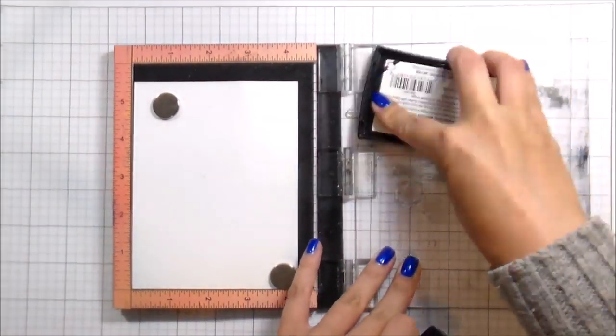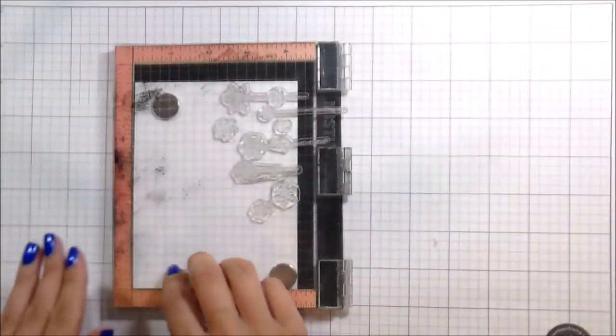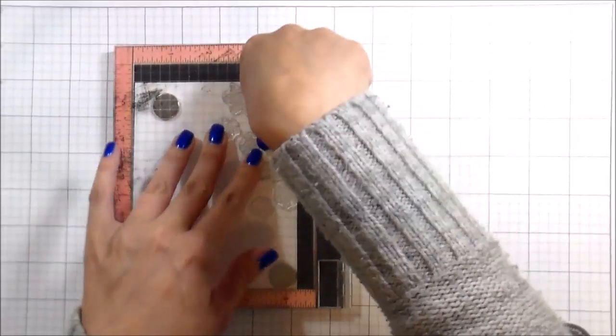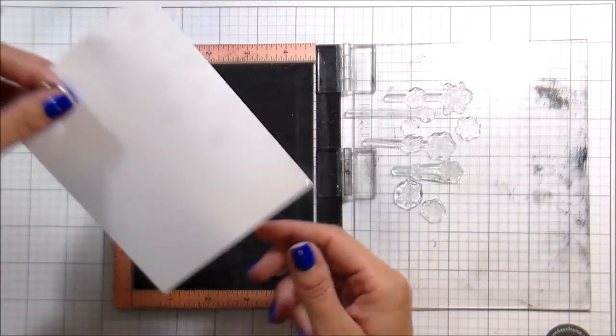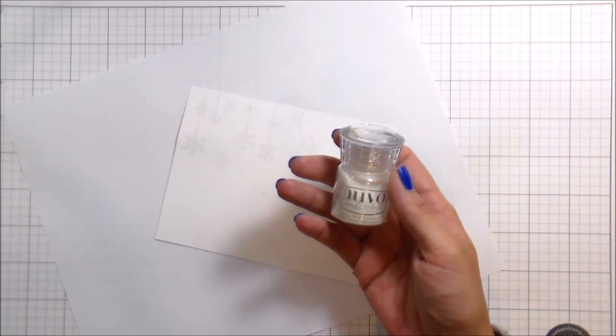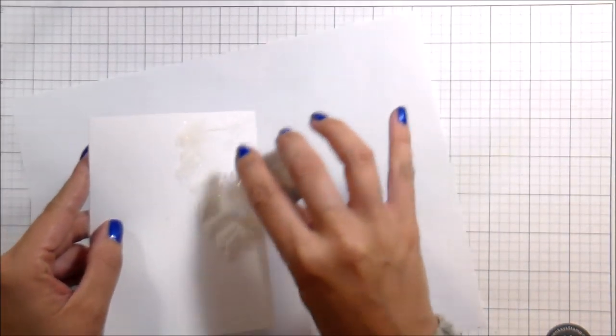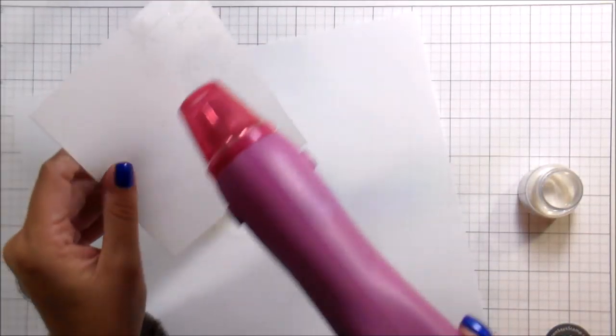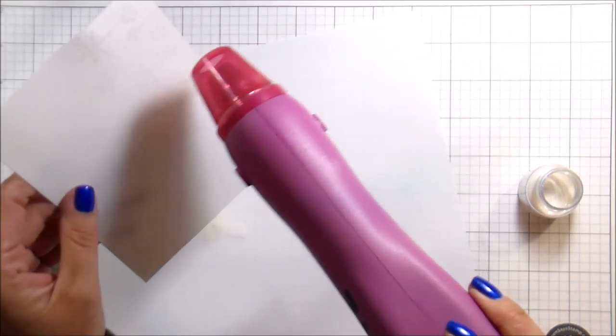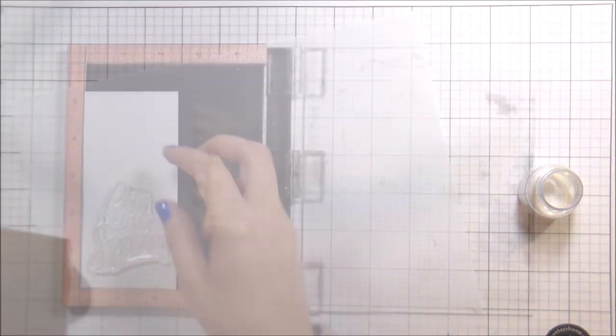So here, what I'm doing is this is just Neenah 80 pound solar white card stock. That's what I used the whole time, except for that Navy, that beautiful Navy is W plus nine. But anyway, so here I am. I treated the paper with my embossing buddy. I'm stamping in Versamark and then I am using embossing powder from Nuvo. This is the glitter embossing shimmering pearl. So it's like a clear embossing powder with a glitter in it, which is really, really pretty. So I'm doing that. And then I'm just going to heat emboss that until it's nice and smooth.